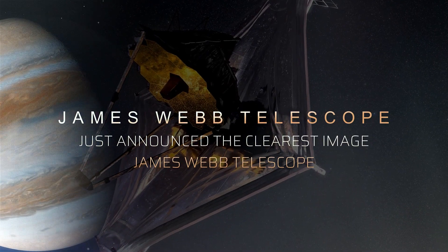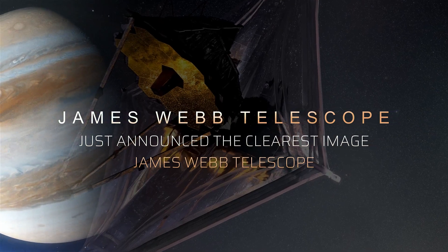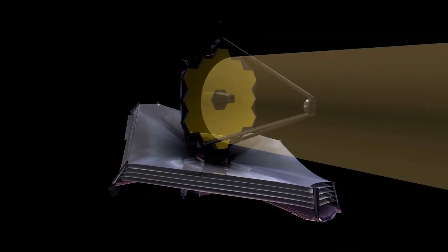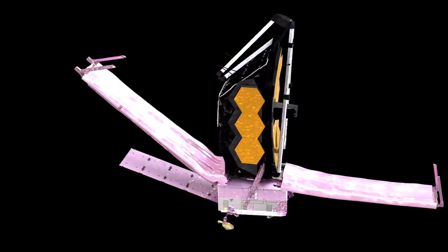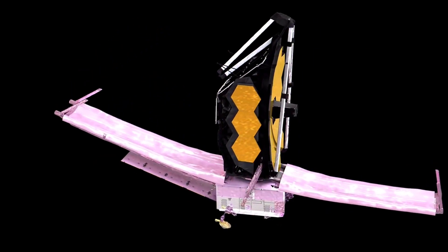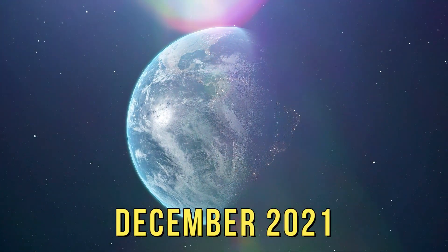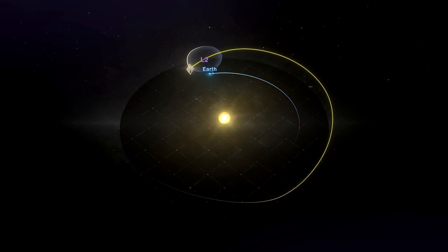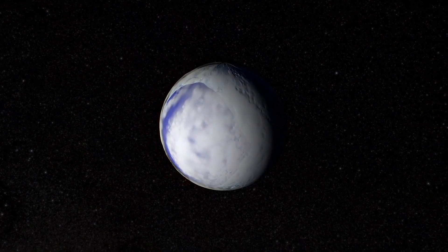James Webb Telescope just announced the clearest image of Proxima b seen in history. Deep in the vast expanse of space, NASA's James Webb Space Telescope is on a mission to uncover the mysteries of the universe. And in December 2021, it captured something truly extraordinary – the clearest image of Proxima b ever seen in history.